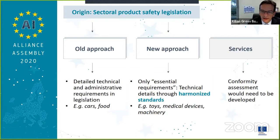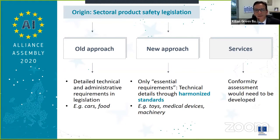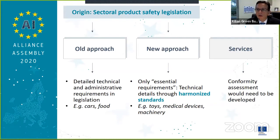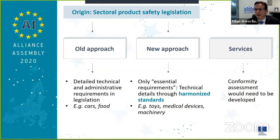One approach could be to refine this and use this tool now for the assessment of complex AI systems. To have a clear understanding, what does conformity assessment mean for different applications of AI? I have a little graph showing what we call the old approach, the new approach, and the area of services. The old approach mainly means we have current sectorial legislation — very important legislation like cars and food, like type approval — where we have detailed technical requirements in the legislation.